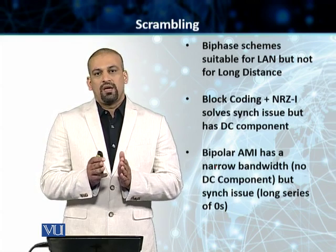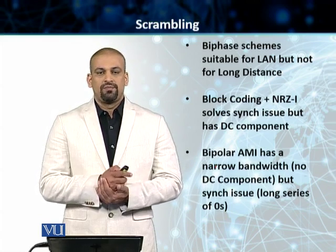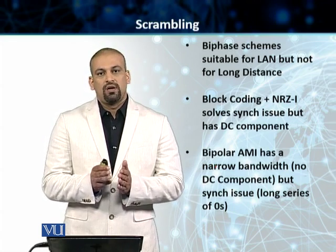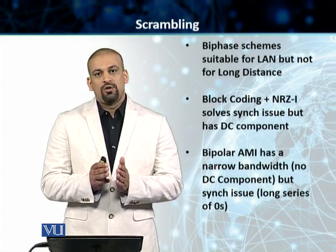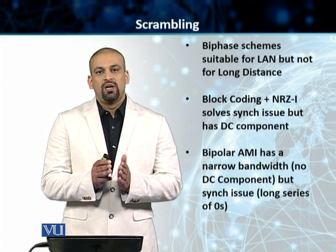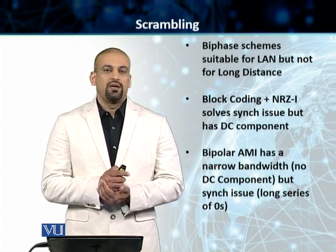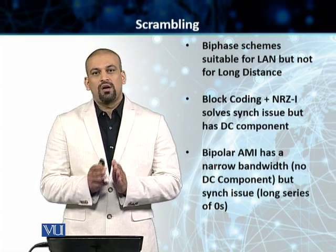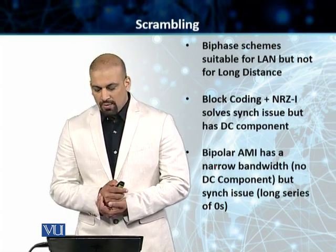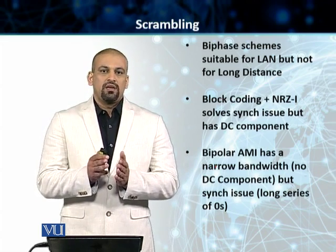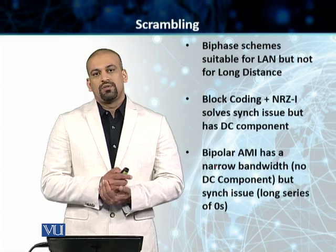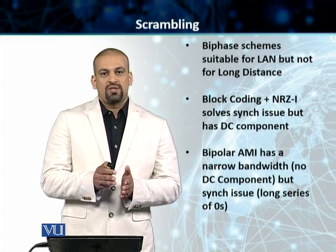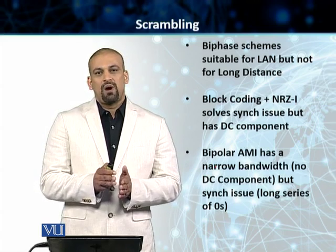Students, AMI — alternate mark inversion — has a narrow bandwidth. The DC component problem is inherent to schemes where we have a large or wide bandwidth, so AMI automatically solves our DC component problem. However, it has synchronization issues: a long sequence of zeros still gives us issues with alternate mark inversion.